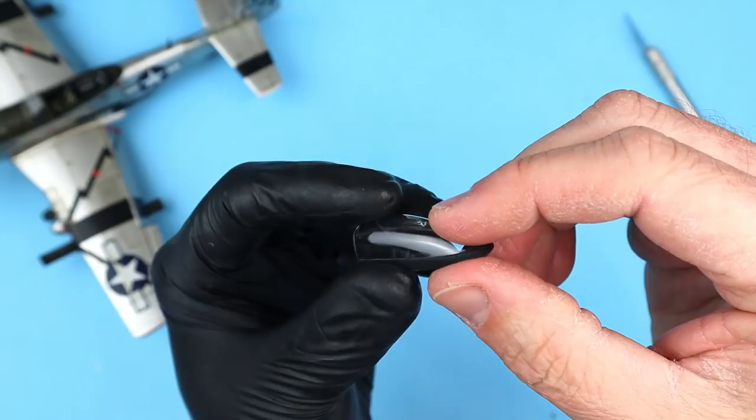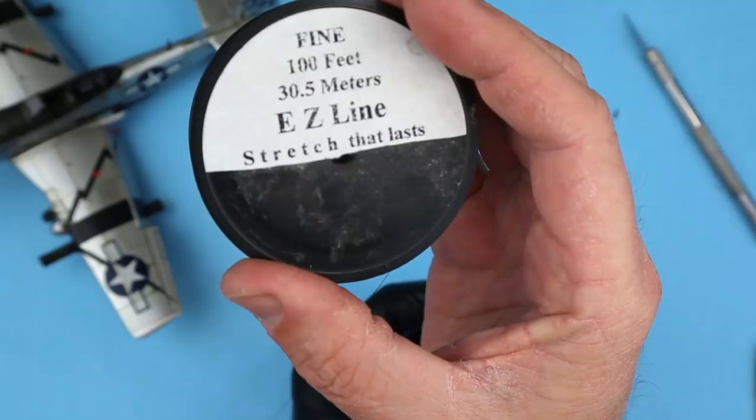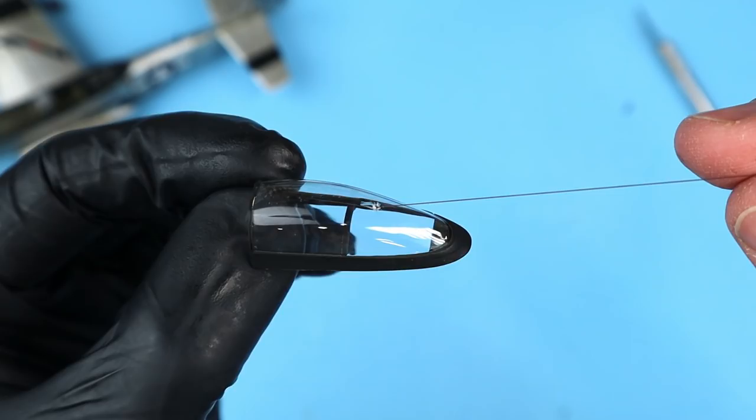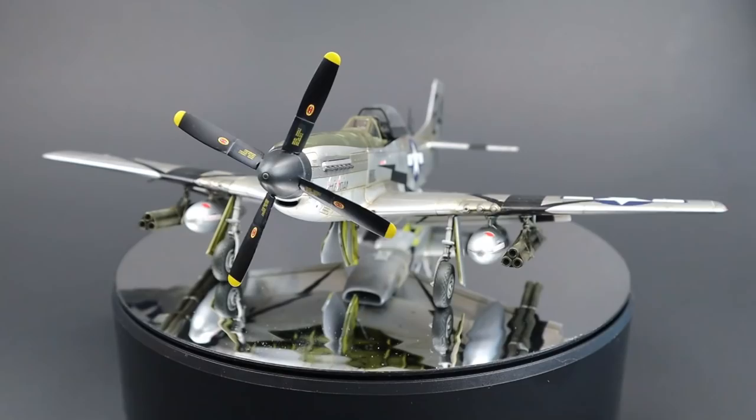The antenna wire ran through the canopy and attaches to the top of the seat back. To enable this I had to drill a small hole using a micro drill and pin vise in the top of the canopy. I route easy line through the canopy and then attach it to the fin and the seat back before attaching the canopy in the open position.